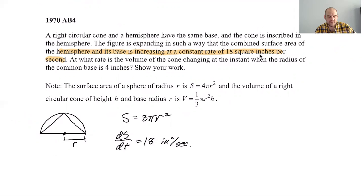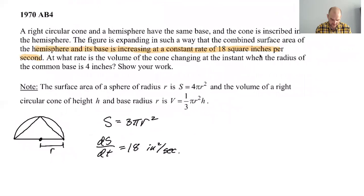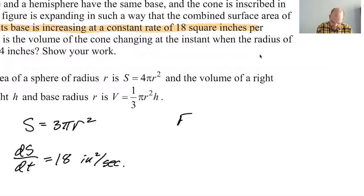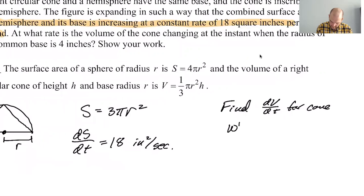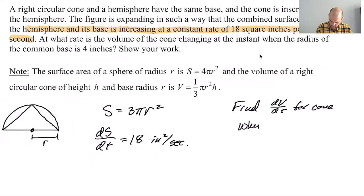At what rate is the volume of the cone changing at the instant when the radius of the common base is 4 inches? So we're trying to find dV/dt for the cone when r equals 4. That's what we want to find.